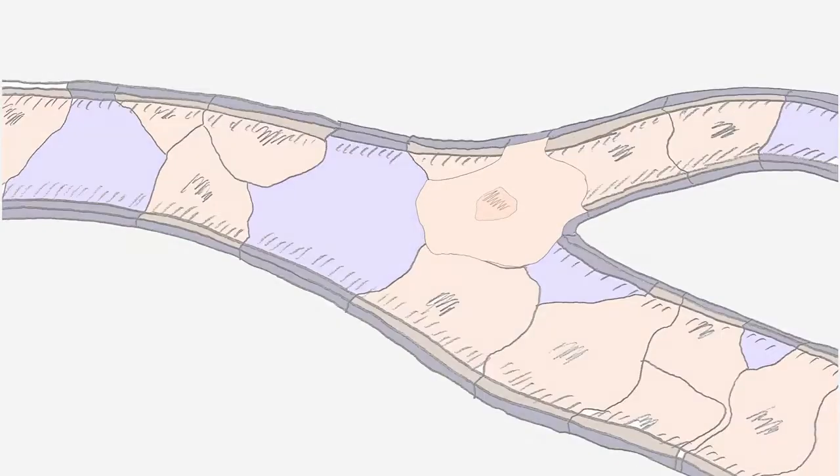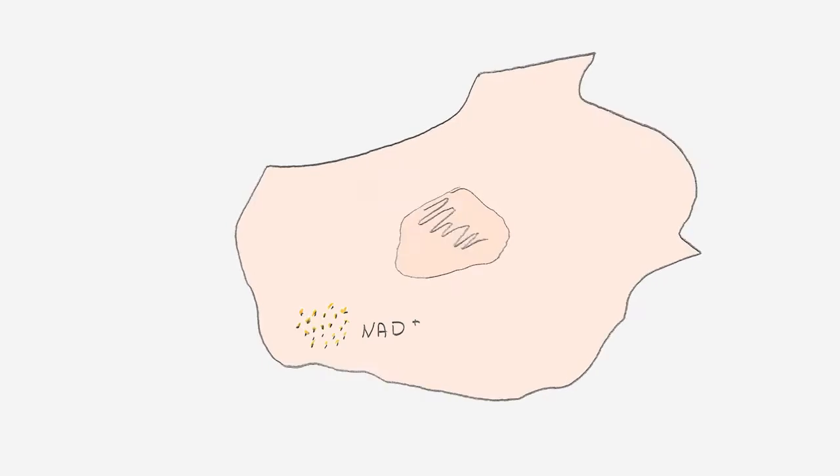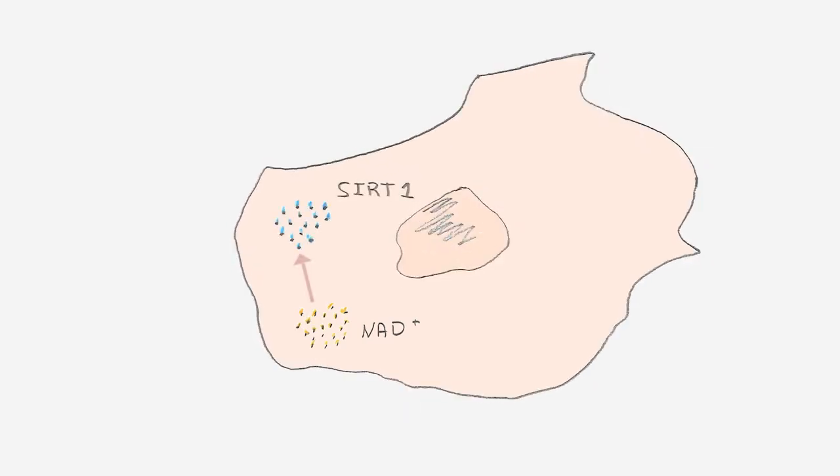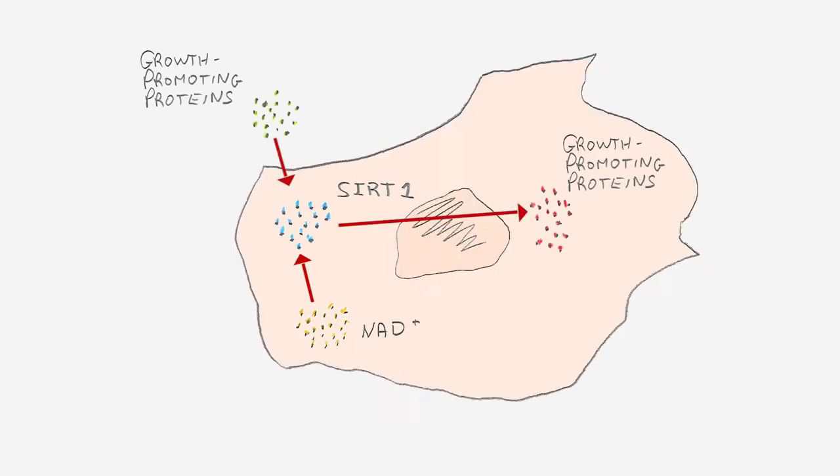The two key players in the crosstalk between blood vessels and muscles are a molecule called NAD and a protein called SIRT1. NAD boosts SIRT1, which in turn enables the conversation between muscles and blood vessels.